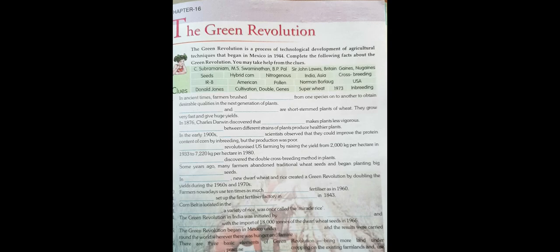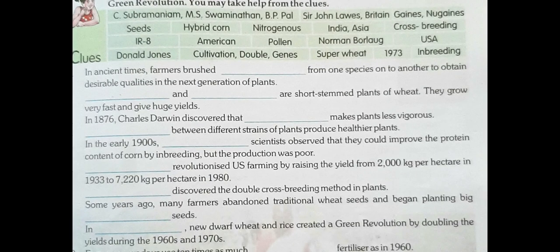These are the short-stemmed plants — their stem is very small. Question number 3: in 1876, Charles Darwin discovered that dash makes plants less vigorous. Vigorous means less active.